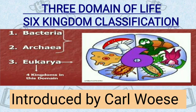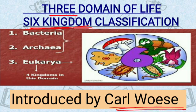In this video, we will study the three domains of life, or what we can call six kingdom classification. This was introduced by Carl Woese. The three domains are: Bacteria, Archaea, and Eukarya. There are three domains, so it is called three domains of life. In the Bacteria domain, one kingdom is present — Eubacteria. In the Archaea domain, one kingdom is present — Archaebacteria. In the Eukarya domain, four kingdoms are present. So total: four plus one plus one equals six kingdoms — that's why it is called six kingdom classification.